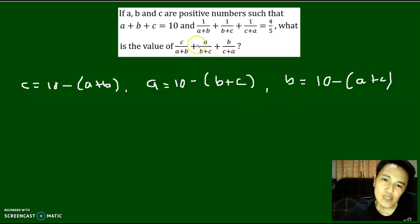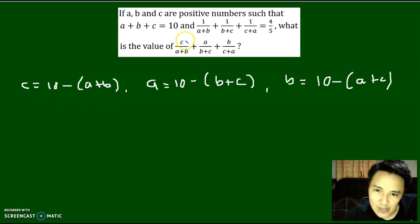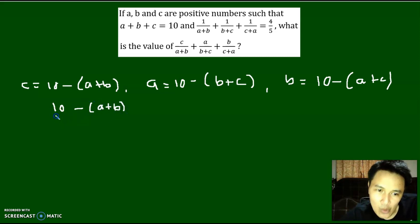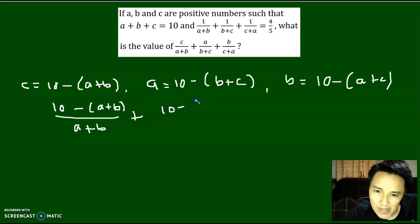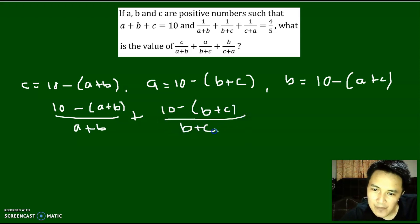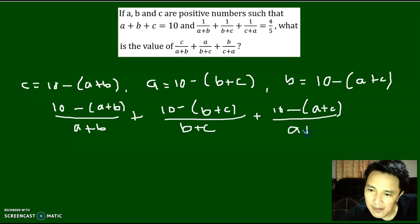Note that we are after for the numerical value of this expression. To obtain that, all you have to do is substitute: C becomes 10 minus A plus B, all over A plus B. Plus, instead of A, we write 10 minus B plus C all over B plus C. Plus, 10 minus A plus C all over A plus C.